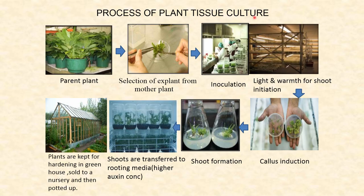Process of plant tissue culture. First, we have to select the parent plant. From the parent plant, selection of the explant from the mother plant will be done. Later on, it will be inoculated into the medium, usually Murashige and Skoog medium.